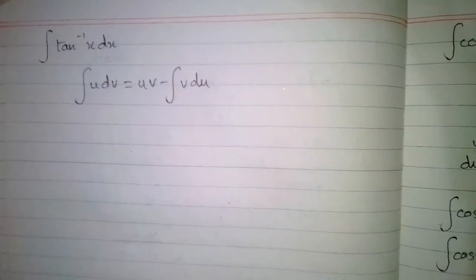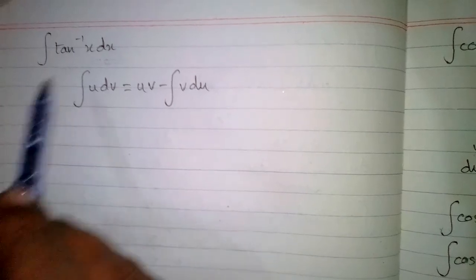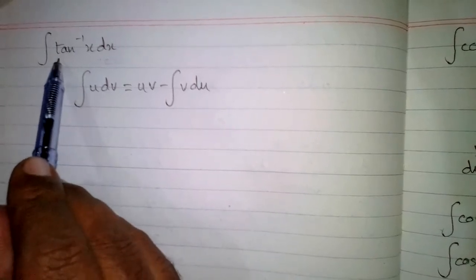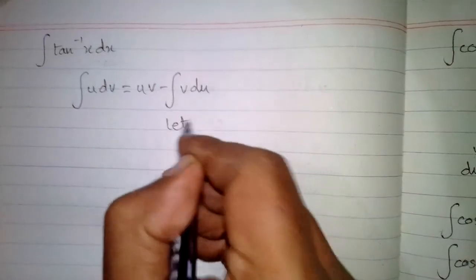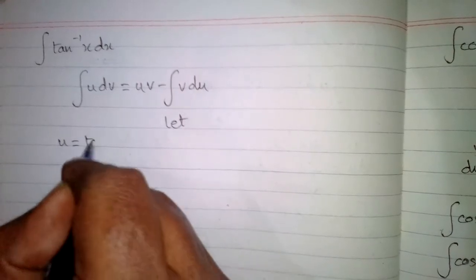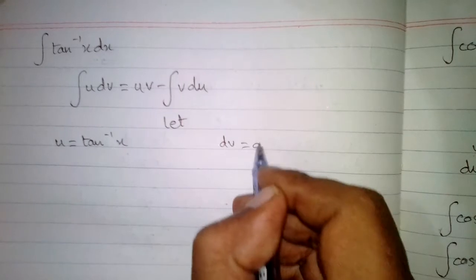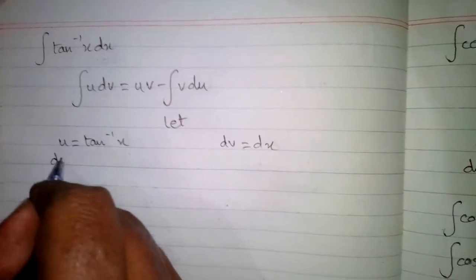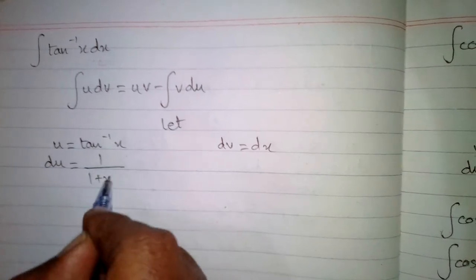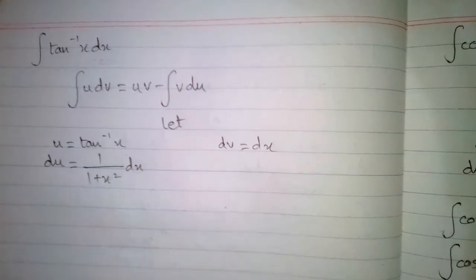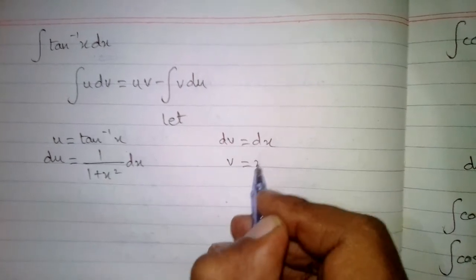We have to suppose what is u and what is dv in this integral. We suppose that tan inverse x is u and dv is dx. So let u equal tan inverse x and dv equal dx. The differential du is equal to the derivative of tan inverse x, which is 1 upon 1 plus x square dx. Taking the integral of both sides, we have v equal to x.